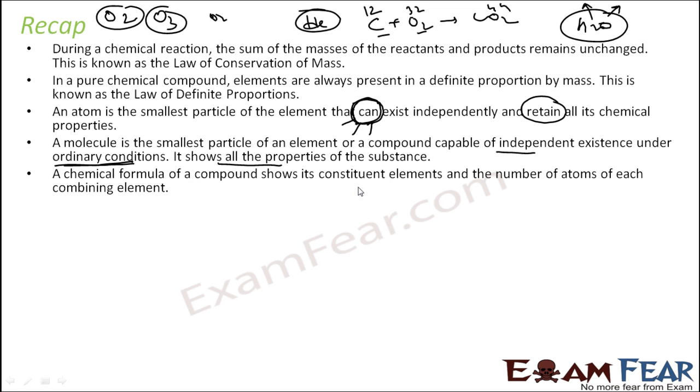We talked about the chemical formula. It shows its constituent elements and the number of atoms of each combining element. For example, water. The molecular formula is H2O. It says that there are two hydrogen and one oxygen combined. And we have also studied the rules to write chemical formulas.